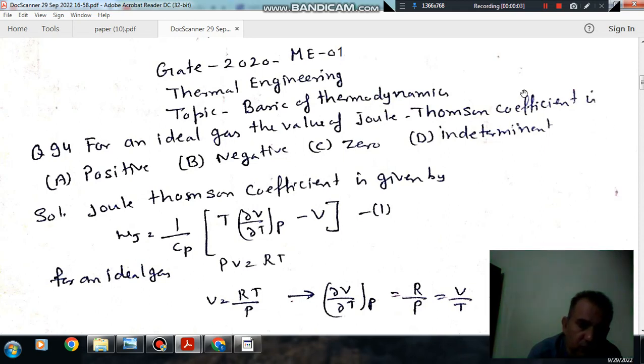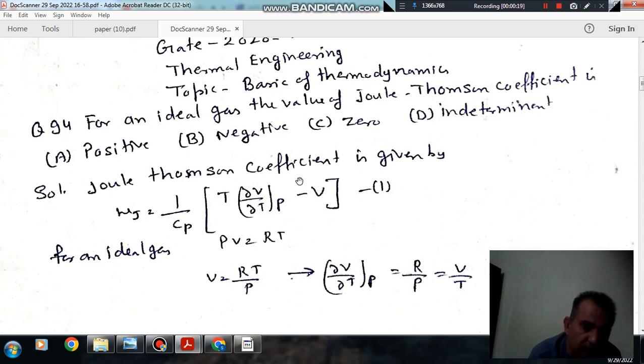Hello, welcome again. We are solving questions of thermal engineering. The topic is basics of thermodynamics. Question number 94 from GATE 2020 ME-01: For an ideal gas, the value of Joule-Thomson coefficient is: (a) Positive, (b) Negative, (c) Zero, (d) Indeterminant. The Joule-Thomson coefficient is given by...